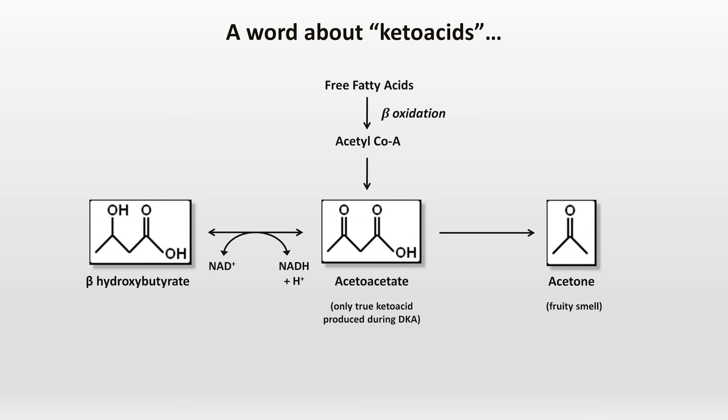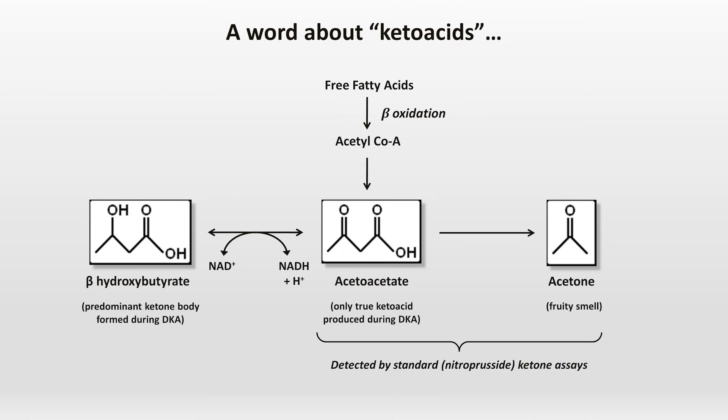Calling them ketone bodies is debatably preferable. The standard ketone assay — sometimes referred to as the nitroprusside assay or nitroprusside test — which detects ketones on a urinalysis or in the blood as a titration ratio, only detects acetoacetate and acetone. However, beta-hydroxybutyrate is the predominant ketone body formed during DKA. Over the last two decades, direct measurements of beta-hydroxybutyrate have become more widely available and are resulted more quickly, making this the preferred method of detecting ketone bodies in suspected DKA in most U.S. hospitals. However, this test is not as readily available as the nitroprusside test in all parts of the world.